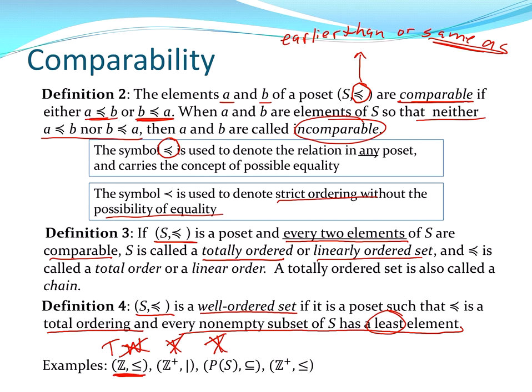For Z+ with the less than or equal to relation, it is a totally ordered set because every two elements are comparable. And since we're restricting to the positive integers, it is also a well-ordered set, because every non-empty subset of Z+ has a least element under this relation.